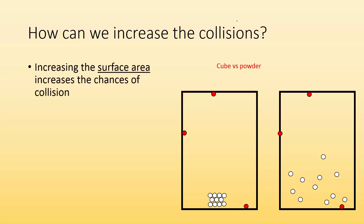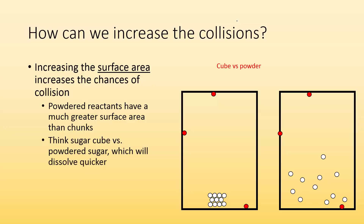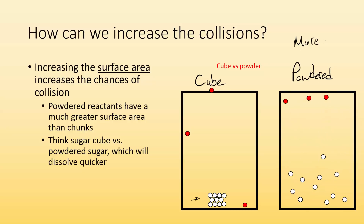First, you can increase surface area — that increases the chances of collision. Think of powdered sugar versus a sugar cube: which dissolves quicker? With the cube, collisions happen every so often. With the powdered form, particles are more spread out, they have more surface area, and you can see there are a lot more collisions going on. So increasing surface area increases chances for collisions, which speeds up the reaction.